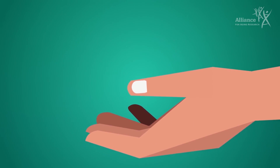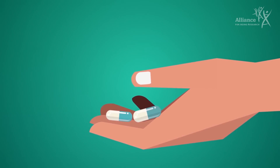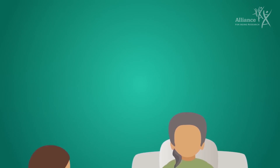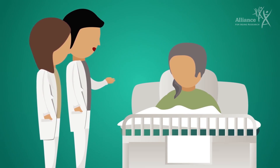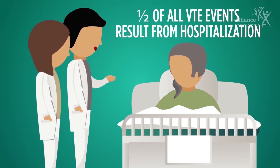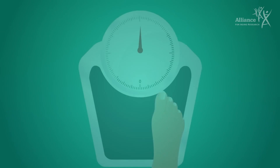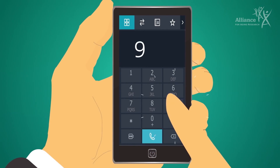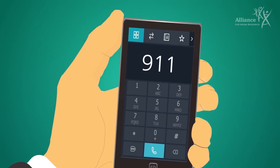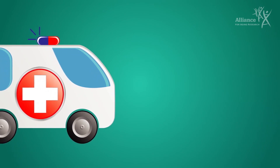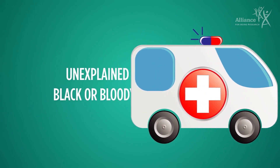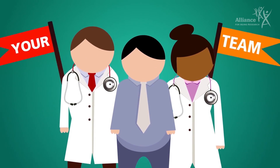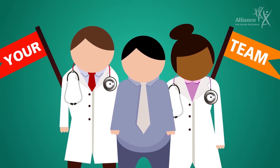Also, be sure to take your anticoagulant as directed, since missing a dose or taking it too late will leave you at a higher risk of new clots. In addition to taking your anticoagulants, be sure to manage your risk of VTE. Follow your healthcare professional's instructions if you are hospitalized or need extended bed rest. Approximately half of all VTE events result from hospitalization. Lose weight if needed. See your healthcare professional regularly. Know the symptoms and risk factors for DVT and PE, and seek immediate medical attention if you experience any. If you have symptoms of bleeding from your anticoagulant, including unexplained severe headache and black or bloody bowel movements, seek immediate medical attention. Together, you and your healthcare professional can prevent VTE and greatly reduce the risk of deadly complications.